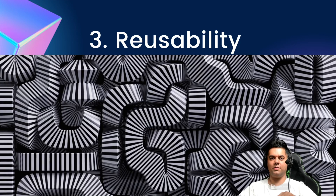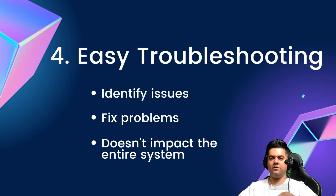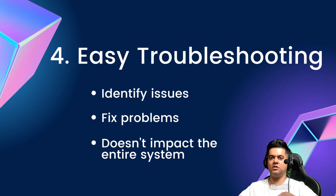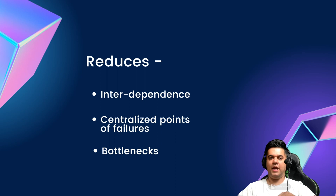Modularization also promotes reusability. Once a module is developed and tested, it can easily be used in different systems or projects. This reduces redundancy and saves valuable time and effort in designing and implementing similar functionality. Modularization facilitates code maintenance and troubleshooting since issues can be isolated to specific modules, making it easier to identify and fix problems without affecting the entire system. This reduces interdependence, centralized points of failure, and bottlenecks — three of the most challenging problems to solve in system design.